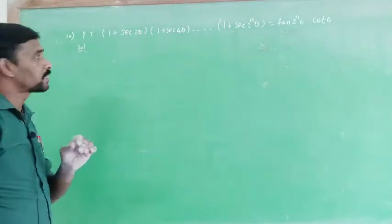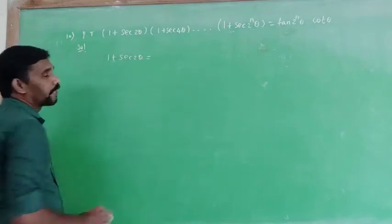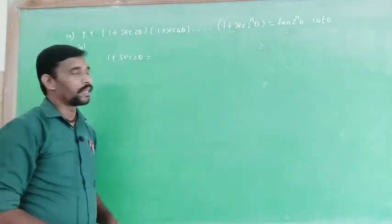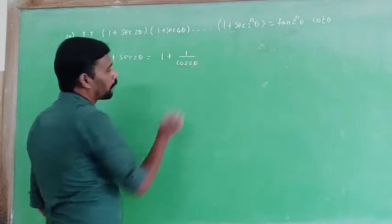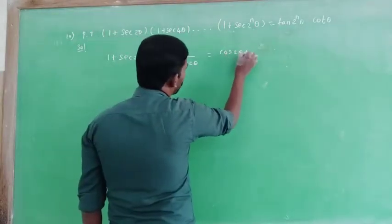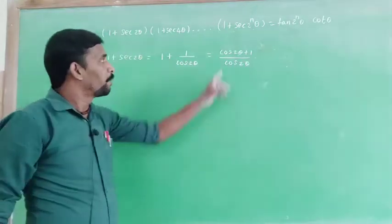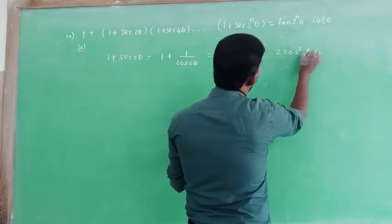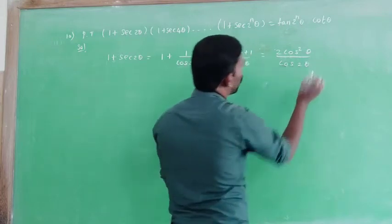We will prove LHS equals RHS. For the first term, we write 1 + sec 2θ. Writing sec 2θ in terms of cosine: 1 + 1/cos 2θ. Cross-multiplying gives (cos 2θ + 1) divided by cos 2θ.